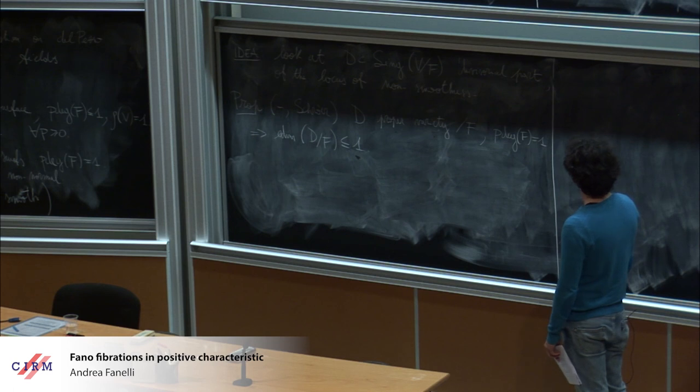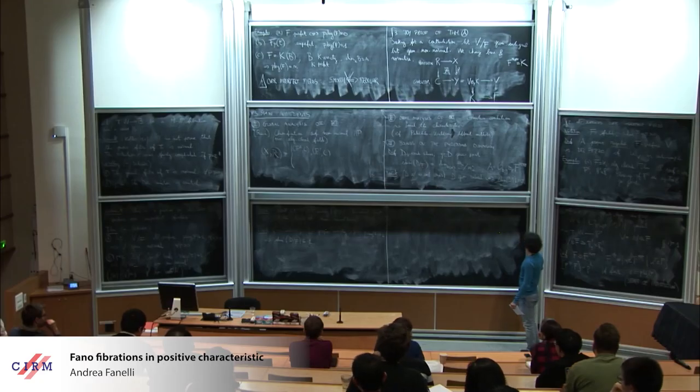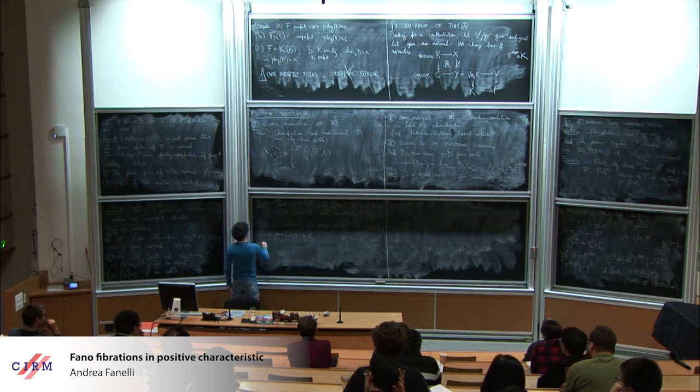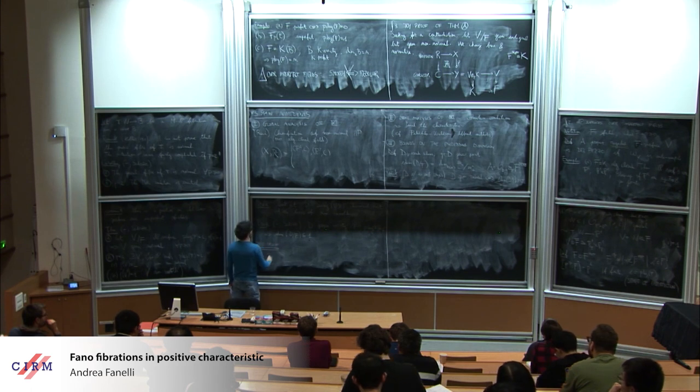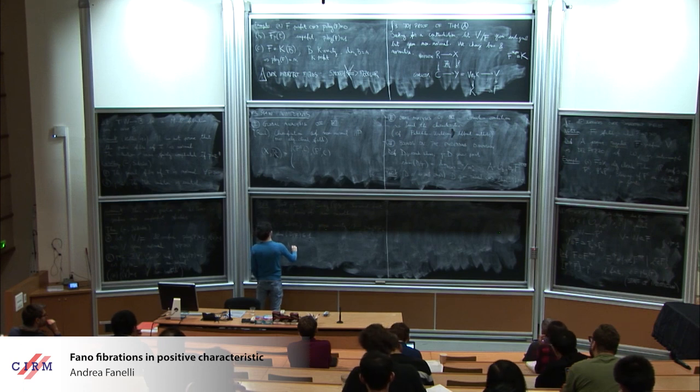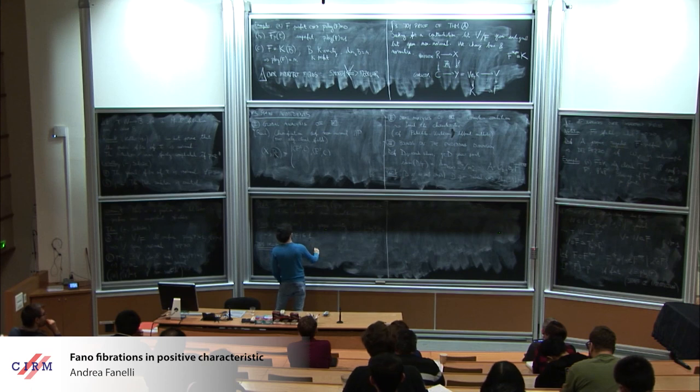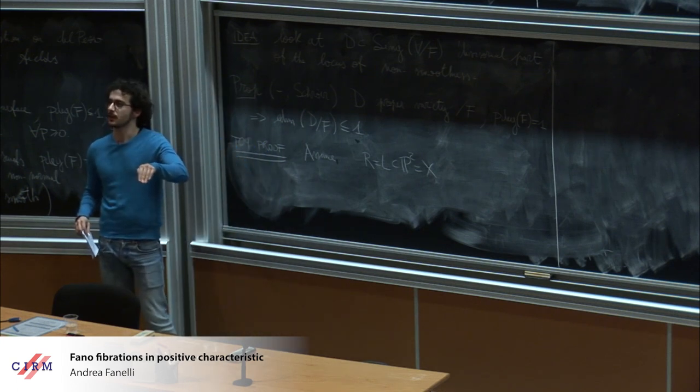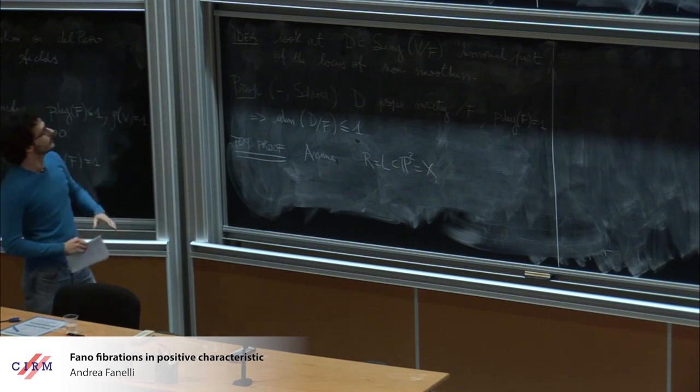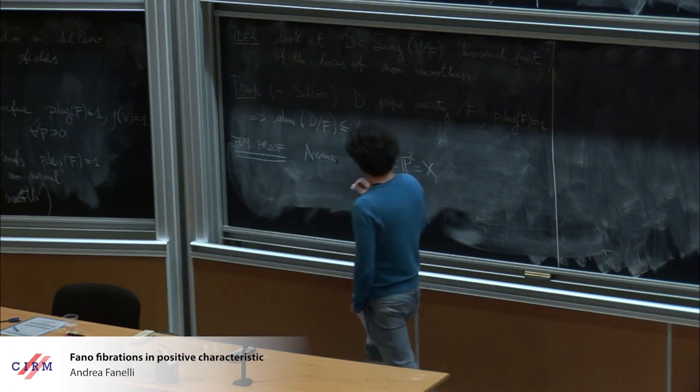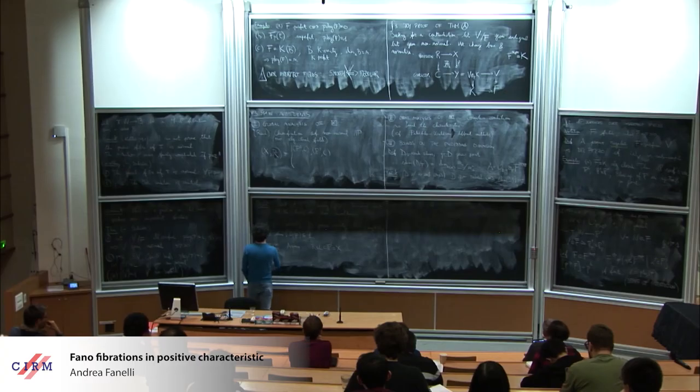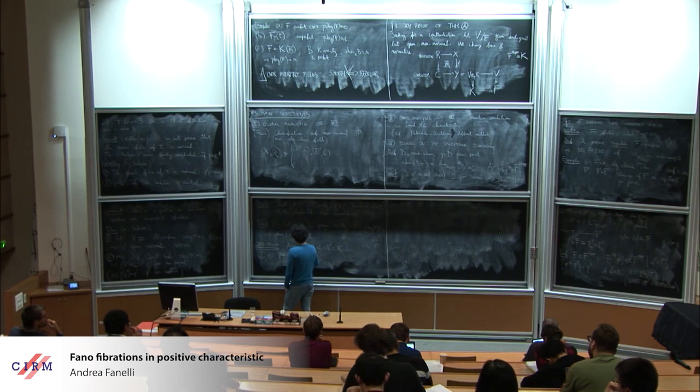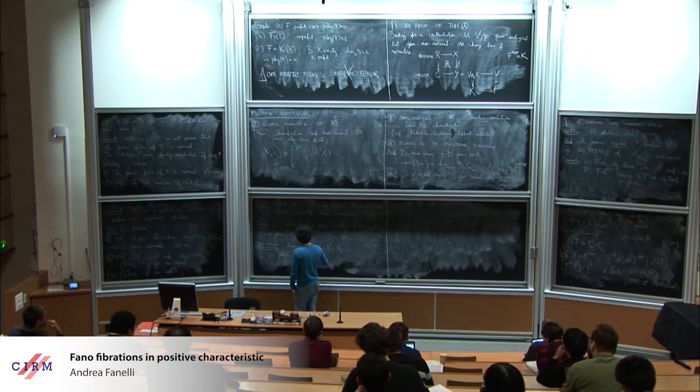And now I do the toy proof. So first assume that the ramification is a line inside P2. You have just to go through all the possible cases in the Reid classification of non-normal del Pezzo's. So let's start with the easy case.